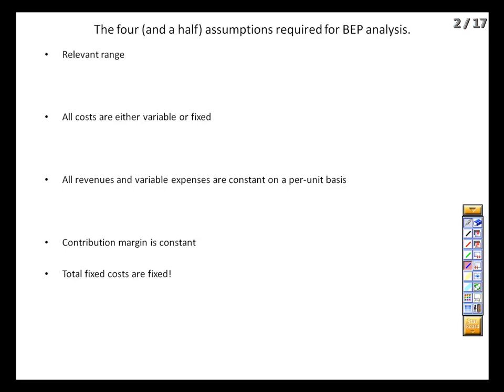The first assumption is that the analysis must be done within a relevant range. There's a difference between going from 10,000 to 11,000 units and going from 10,000 to a million units. Break-even and cost-volume-profit analysis is a purely linear relationship, and our fixed costs are essentially our intercept — that number needs to be static for this to work, and it won't be if we need to buy a new factory to meet our production level. If we go outside that relevant range, we're going to need a new equation.